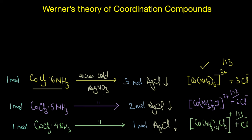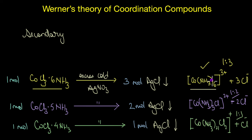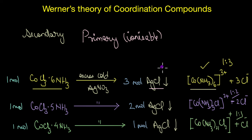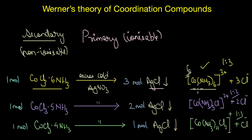From these experiments, Werner proposed that the metal in a coordination compound has two different types of valencies. Secondary valency refers to atoms within the square brackets that form a single entity and do not dissociate under experimental conditions. Primary valency is ionizable. The chloride ions that precipitated as AgCl were those linked by primary bonding, while chloride ions within the square brackets — coordinated to the metal through secondary valency — were non-ionizable and did not precipitate.